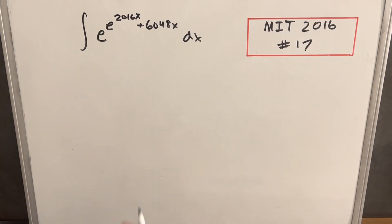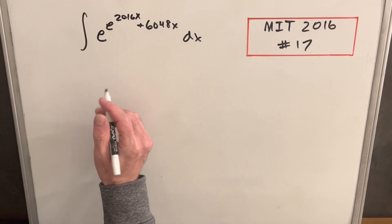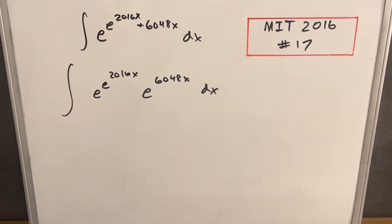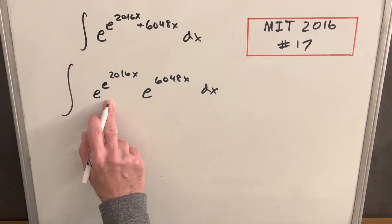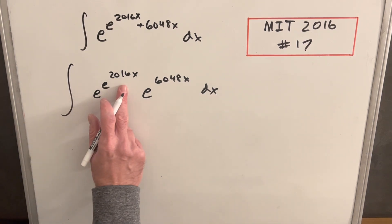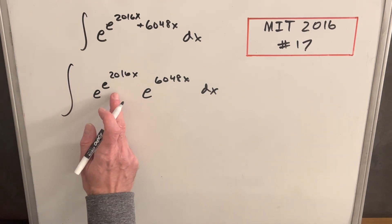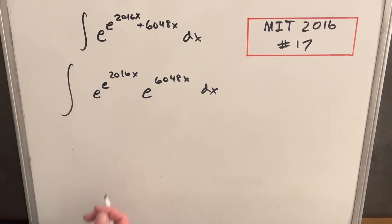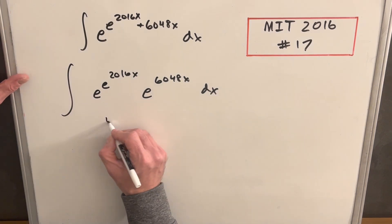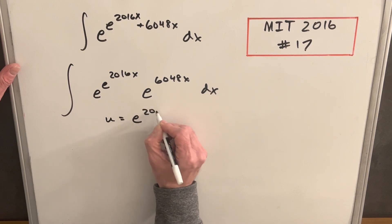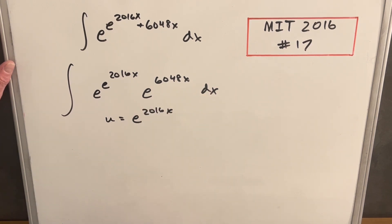To get started, I don't really like an addition in the exponent, so we're going to break this up and write it as multiplication. Another thing that bothers me is e to the e — I think this is a good indication we want a u-substitution. e to the e is pretty confusing, so I'm going to make a u-substitution and call u equal to e to the 2016x.